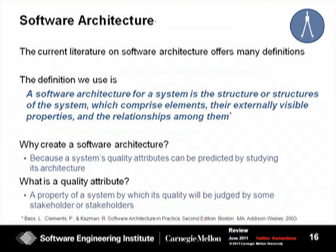Those would be the concepts related to service-oriented architecture that I wanted to review. I also wanted to review some concepts associated with software architecture because I will be using some of these terms throughout the webinar. As far as software architecture, there are many, many definitions. In fact, if you look at our website, you will find approximately 150 definitions of software architecture that we've collected over the years. However, the definition that we use is that a software architecture for a system is a structure or structures of the system which comprise elements, their externally visible properties, and the relationships among them.